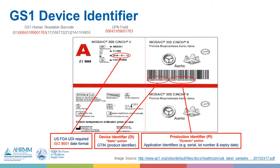Looking at the GS1 example here, there's a lot of information on this label. We need the information in both human and machine readable format. The numbers highlighted in red are the identifiers we want to make sure are captured in the item master. You can see it starts with '01' and then we have the string of 14 digits following that, along with other digits followed by parentheses. The numbers following '01' are what need to be in the item master. The '17' in parentheses indicates the expiration date. If there's a '10' or '21' in parentheses, those are for the lot number and serial number respectively.